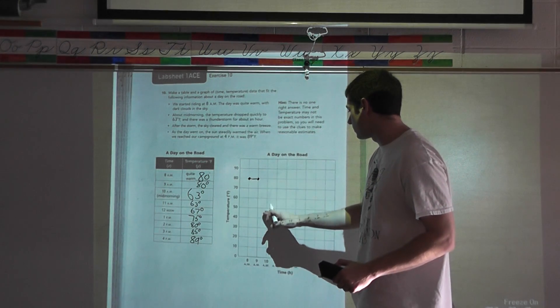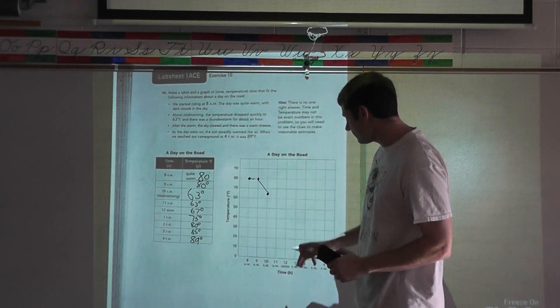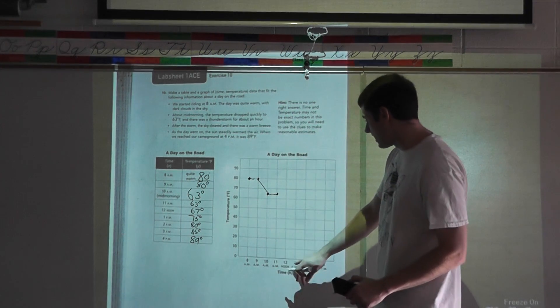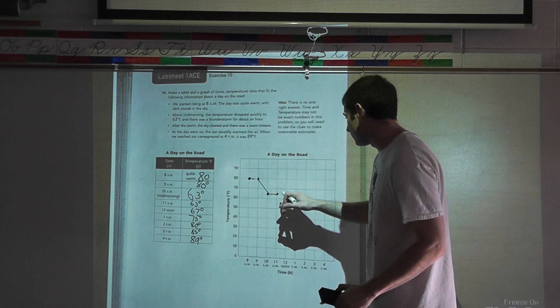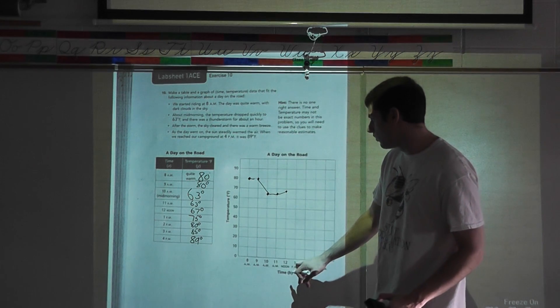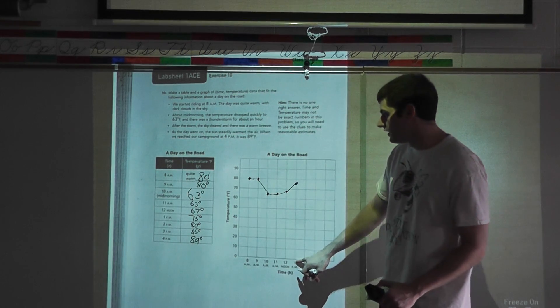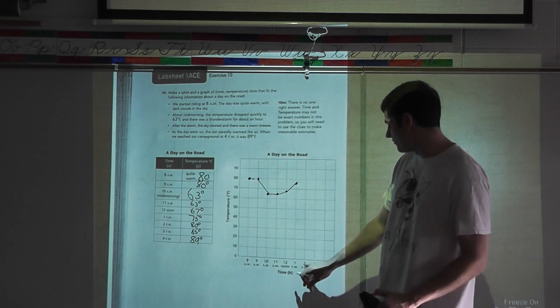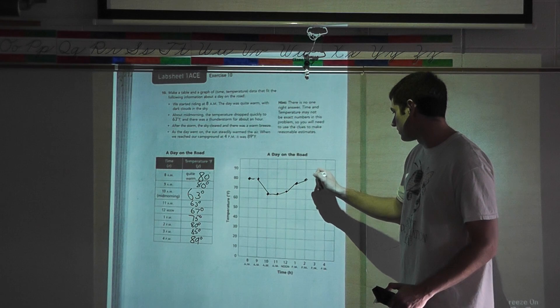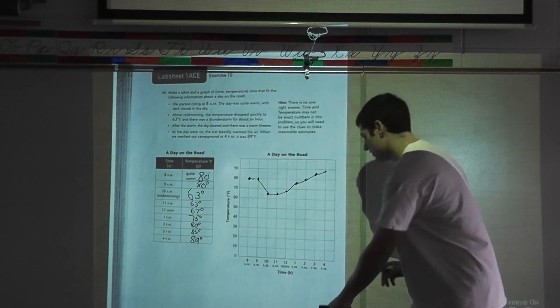At 8 a.m., I said that it was quite warm at 80 degrees. My dot right there on 80 degrees. At 9 a.m., probably stayed about the same. At 10 a.m., I said it was 63 degrees. So I'm going to go up there 60. That looks about 63 degrees. I connect that data point there. At 11 a.m., it stayed about the same. Then at 12 noon, 67 degrees, 1 p.m. 75 degrees, 2 p.m. 80 degrees, 3 p.m. 85 degrees. Then last, 4 p.m., it's not quite 90, but it's just underneath it.